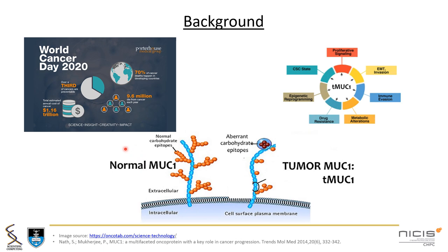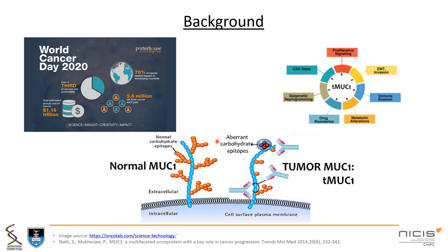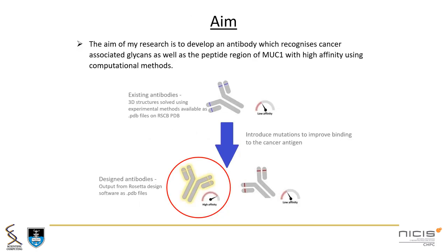In healthy cells, MUC1 consists of long branched sugars, whereas in cancer cells these sugars are truncated. This key difference makes MUC1 a viable target for antibody treatment. While there are antibodies that recognize the MUC1 protein, none of these recognize the altered sugars associated with cancer. My research aims to design and investigate the interactions of such an antibody using computational methods.